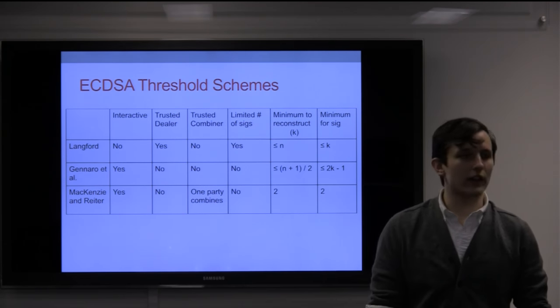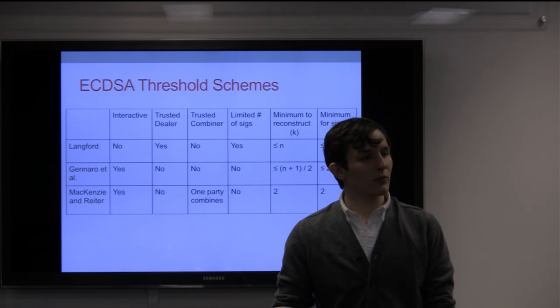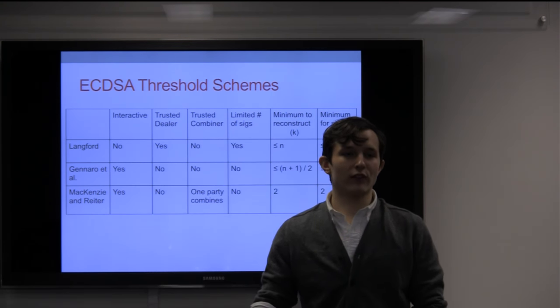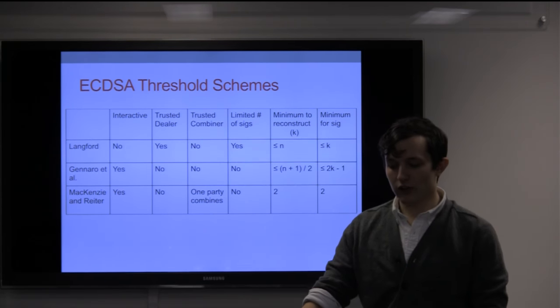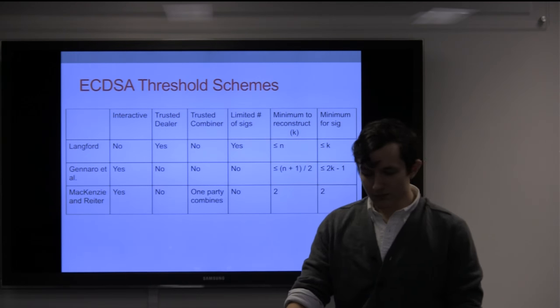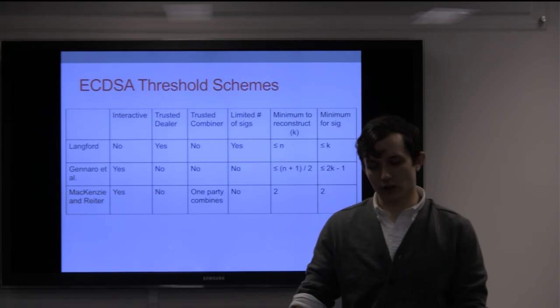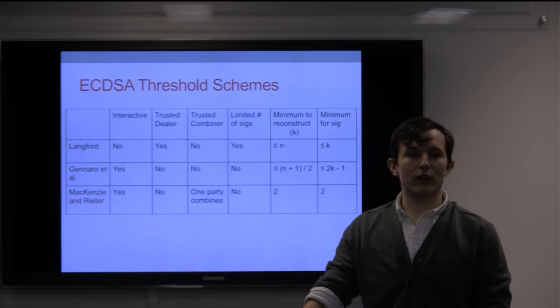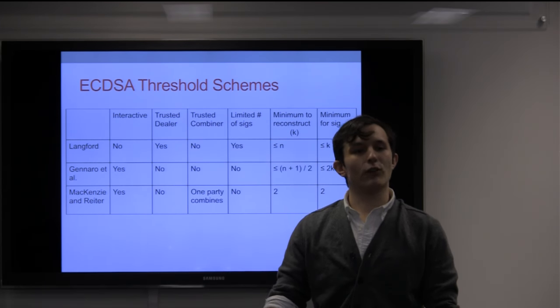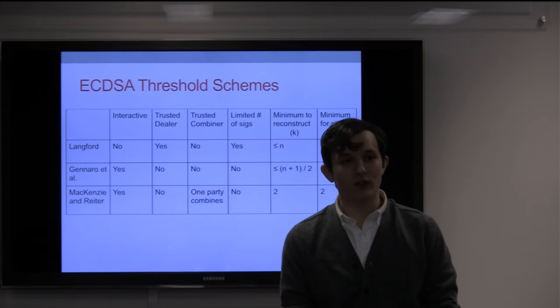Gennaro and a group of people created an interactive scheme that does not require a central party, which is nice, but you cannot have arbitrary access protocols. There's a threshold on you need n plus 1 over 2 to reconstruct the key. For 5 people you need 3, but the minimum to make the signature without doing that is also 5. In this case we can do it, but you can reconstruct the key with fewer, so that leads you open to another security issue if you have a smaller group of people willing to negotiate and make the key themselves and embezzle from you, which isn't good.